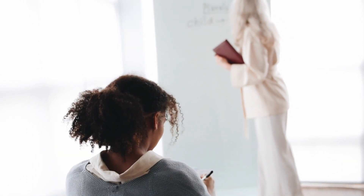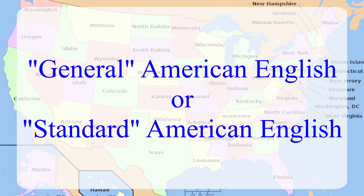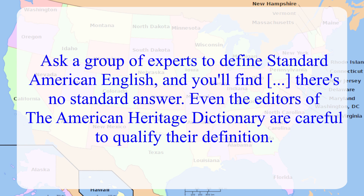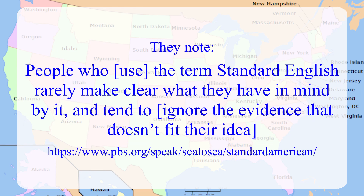American English pronunciation teachers and accent reduction coaches usually teach something called General American English or Standard American English. This is supposed to be a very neutral sounding pronunciation based on speakers in the Midwest. But what exactly is General or Standard American? Ask a group of experts to define Standard American English and you'll find there's no standard answer. Even the editors of the American Heritage Dictionary are careful to qualify their definition. They note that people who use the term standard English rarely make clear what they have in mind by it, and tend to ignore the evidence that doesn't fit their idea.